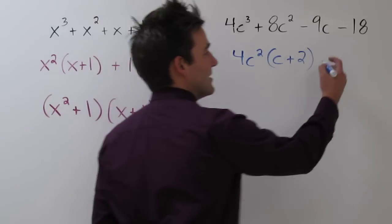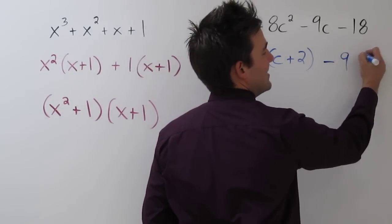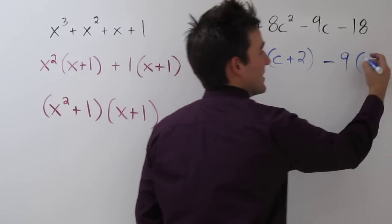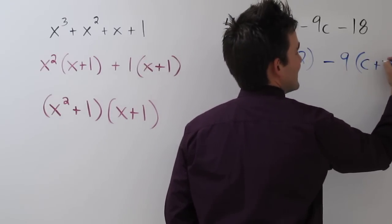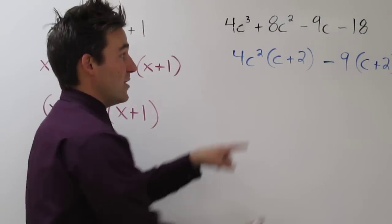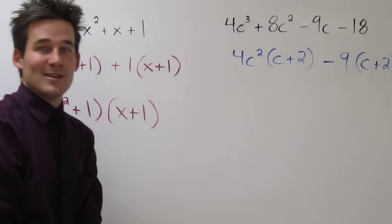Well, they share a negative 9 together. So negative 9, if we factor that out, we're left with c plus 2. And again, we have matching binomials.